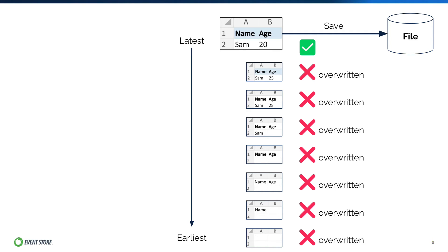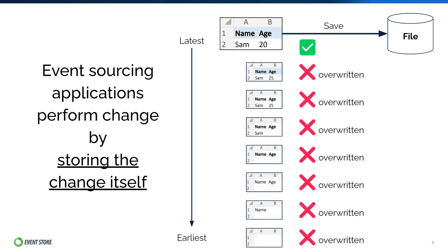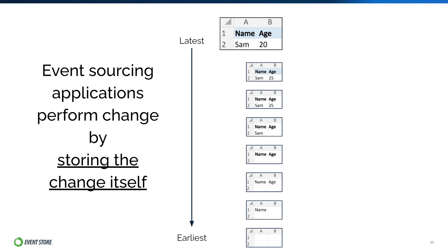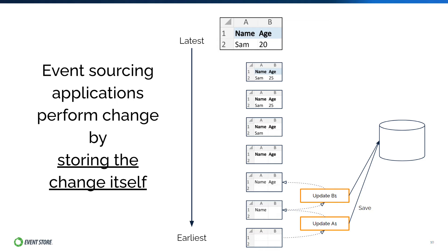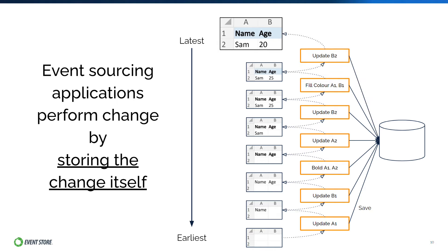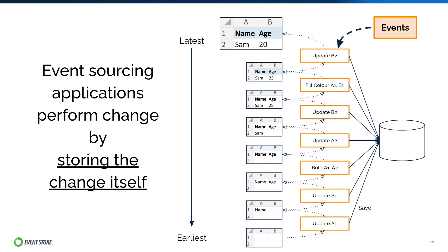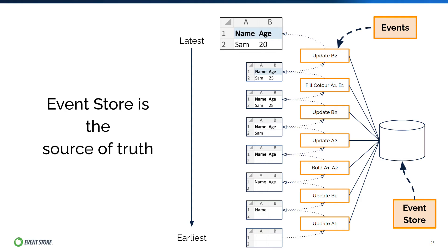On the other hand, event sourcing turns this completely inside out, as applications perform change by storing the change itself. Using this spreadsheet example, when a spreadsheet is changed, event sourcing would save the change to the database, and as more changes are made, every single update, format change, row addition, deletion — everything is saved to this database. The application changes stored in this log are known as events, and the database itself is known as the event store. Event store is considered the source of truth, since all events are stored in it.